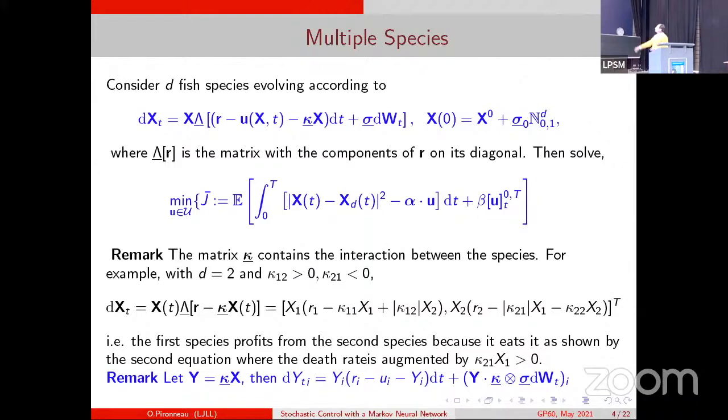So, you can write this in vector form. I have a little problem of notation is that X is a vector. And the lambda is the operator that transforms a vector into a diagonal matrix. So, with this notation, sometimes it's called diag, but I don't like diag. So, I put lambda. And in this sense, it makes sense. You have noise over all the components of the species. And so, you have a matrix of correlation of the Brownian motions, sigma. And you have also similar things on the initial condition.